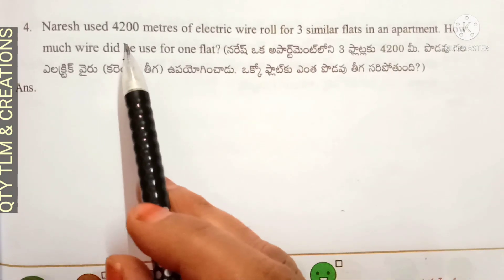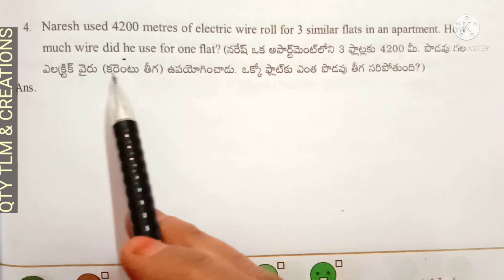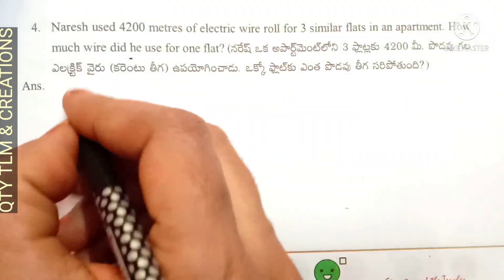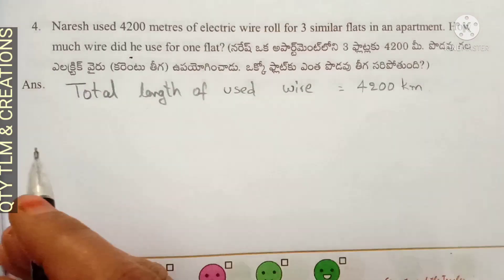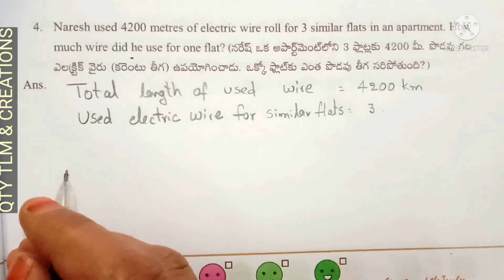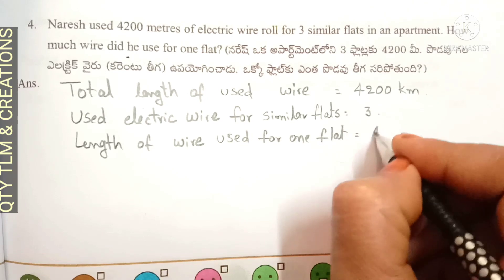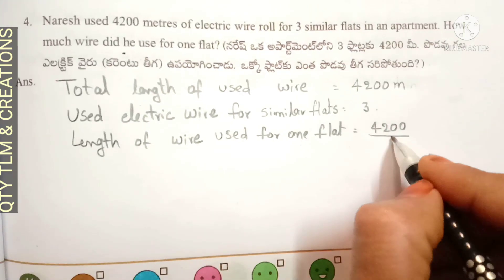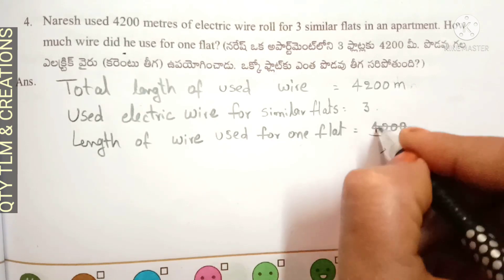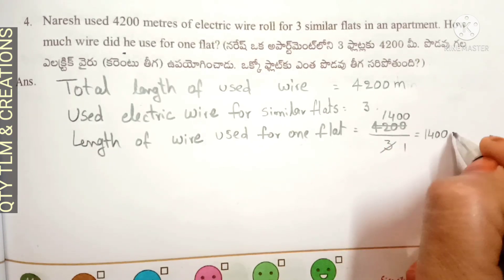Next question: Naresh used 4200 meters of electric wire roll for three similar flats in an apartment. How much wire did he use for one flat? Total length of used wire is equal to 4200 meters. Electric wire used for similar flats is equal to 3. Dividing — 3 ones are 3, 3 fours are 12, giving 1400 meters. Length of wire used for one flat is equal to 1400 meters.